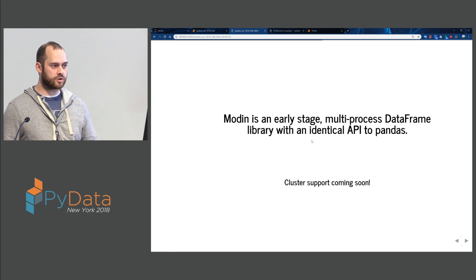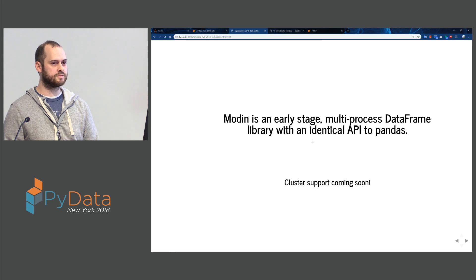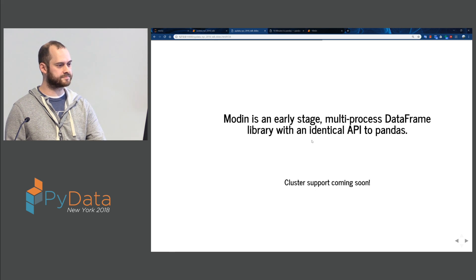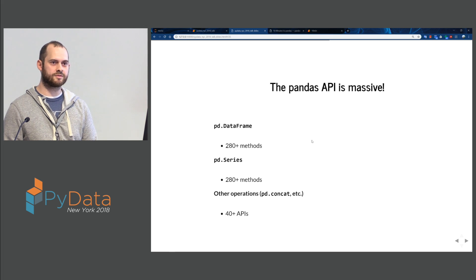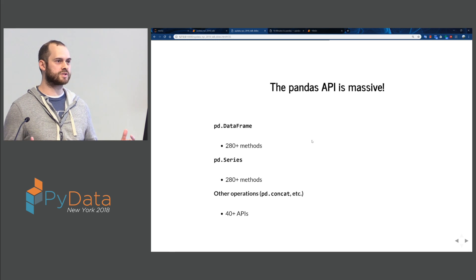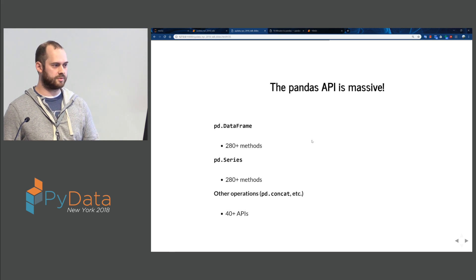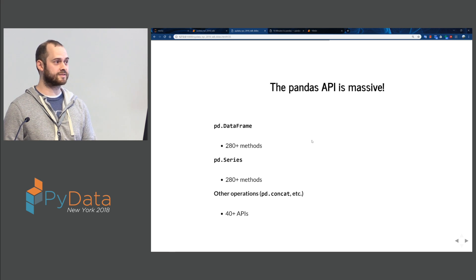Modin is an early-stage multi-processed DataFrame library with an identical API to Pandas. Cluster support is coming soon. The Pandas API is massive — it has a very rich API, which is partly why it's used across so many industries. DataFrame has 280-plus methods, Series has 280-plus methods, and other operations like concat or get_dummies are 40-plus. That's a lot of operations.